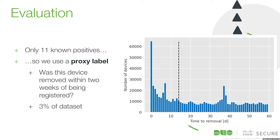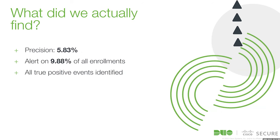So what does this mean? Precision against that proxy metric is 5.83% — if there's an award for lowest precision at CAMLIS, I will gladly accept it. But as Becca talks about, what we care more about is the experience. If we alert on only 10% of those enrollments, that might mean a security analyst only needs to check that dashboard once every two weeks instead of every single day. Or in cases where 1,000 new students show up, they need to go through 100 of those events, not all 1,000. For these overtaxed security analyst teams that might not even have security as their primary job title, that can save a lot of effort.